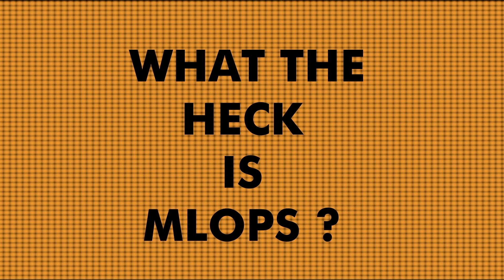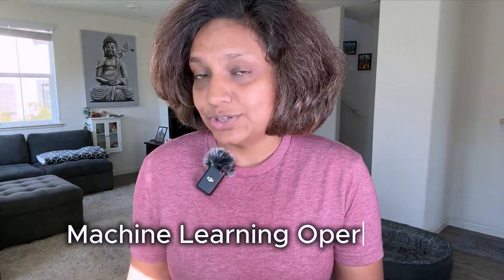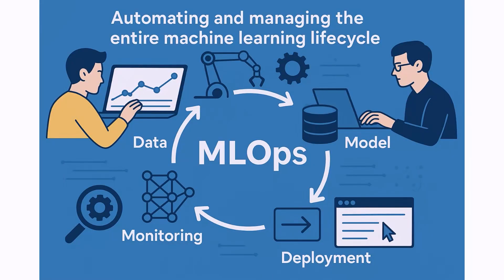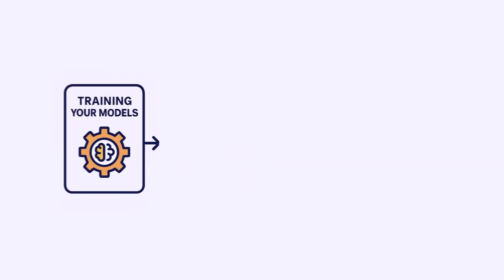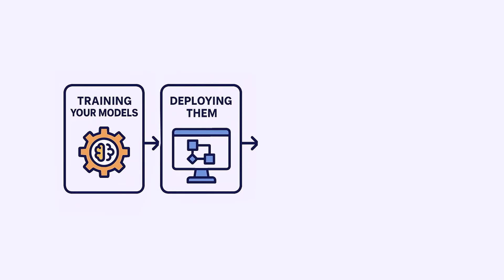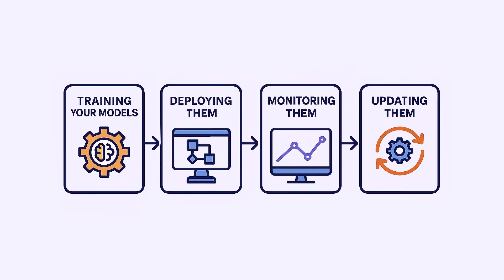Today, we're diving into the complete MLOps roadmap. So first things first, what the heck is MLOps anyway? MLOps, which stands for Machine Learning Operations, is basically DevOps for machine learning. It's the practice of automating and managing the entire machine learning lifecycle — everything from training your models to deploying them, monitoring them, and updating them when they inevitably start to drift.